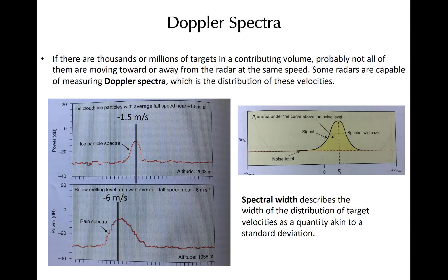In a contributing volume, millions of individual hydrometeors may be present. Not all of them move at the same speed. The Doppler radial velocity reported represents the mean radial velocity of targets in a contributing volume. Some radars can capture the Doppler spectrum in a volume and report a quantity called the spectral width.